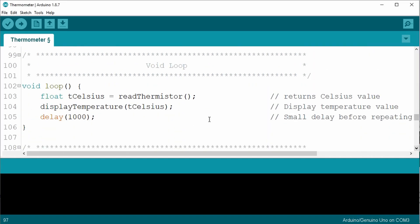The void loop has been simplified, at least simplified from lesson 23's tutorial. It starts by calling a function to read the thermistor, which will return a value in Celsius and assigns the value to a float T Celsius. The next line calls a function display temperature and passes the parameter T Celsius. There's a small delay and then it loops. Simple.